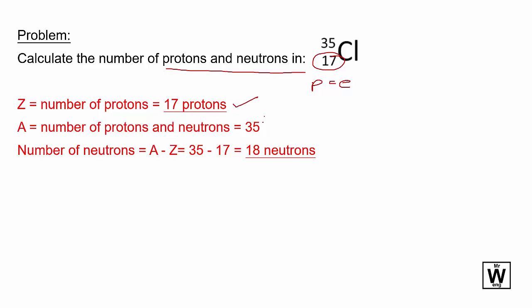We take the mass number 35 minus the atomic number 17, which gives us 35 minus 17 equals 18 neutrons.